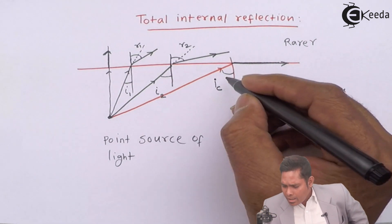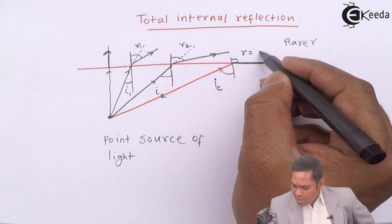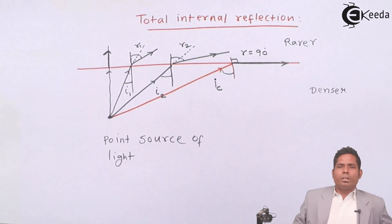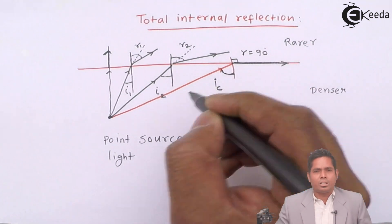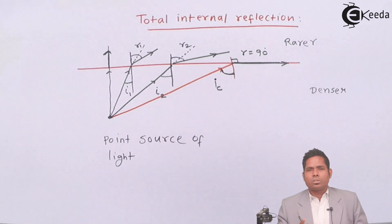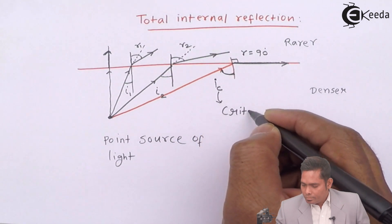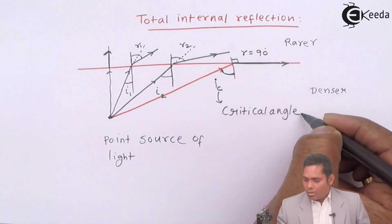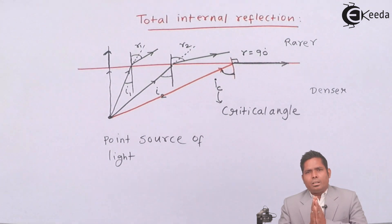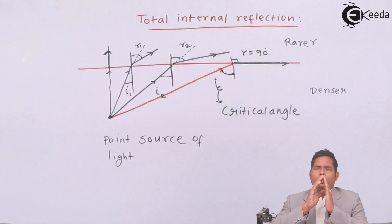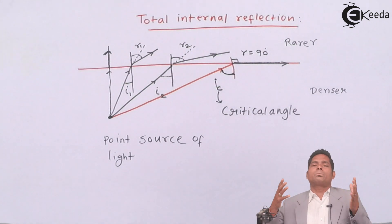So this angle — which is responsible for the refracted ray grazing the surface — is called the critical angle. The angle of refraction in this case is 90 degrees. Critical angle is that angle of incidence in the denser medium corresponding to which the refracted ray moves along the surface, meaning the angle of refraction becomes 90 degrees.